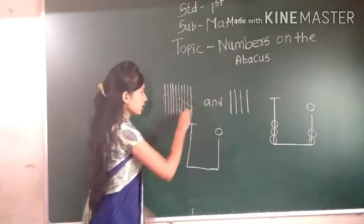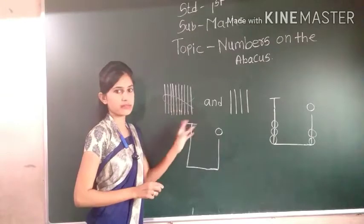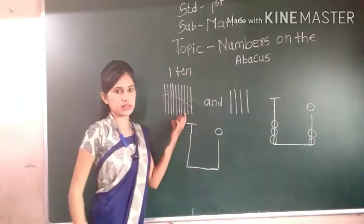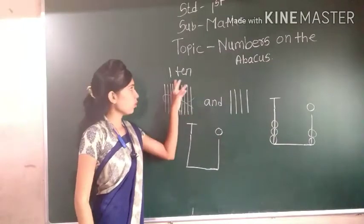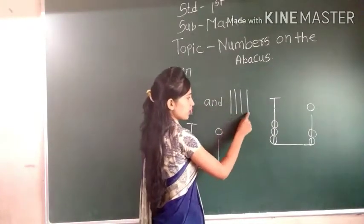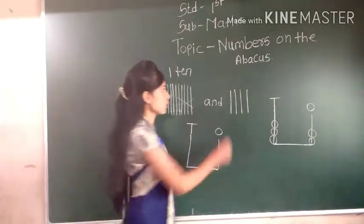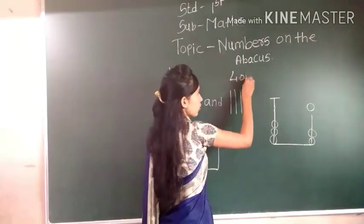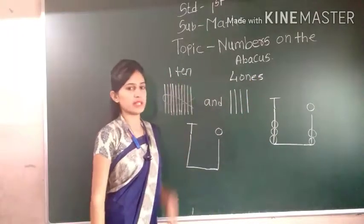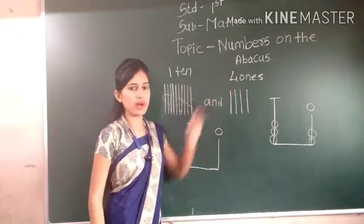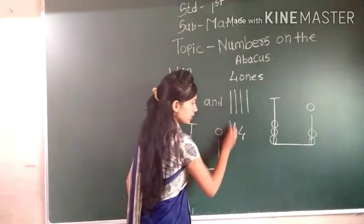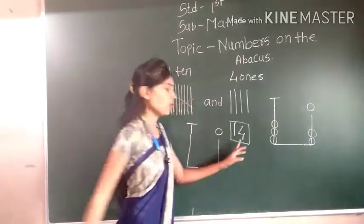See here. There are ten sticks — a bundle of ten sticks — so one ten. Bundle of ten sticks means one ten, and single loose sticks: one, two, three, four. Single four sticks. So we have to write here four ones. Students, tell me which number is formed. One ten and four ones — the number formed is fourteen.